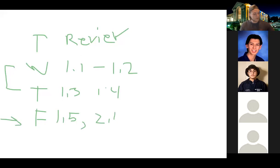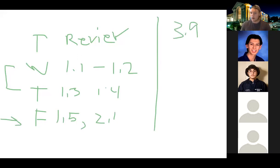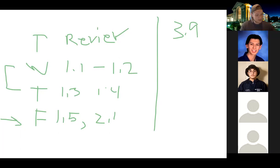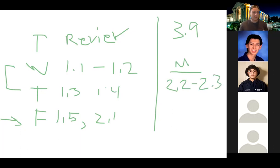We're going to try and get all the way up to section 3.9, but we're not going to do all the sections from each chapter — just the ones required for Math 1A. I'll have a detailed list for that. Today we're going over sections 1.5 and 2.1. On Monday we're going to go over 2.2 and 2.3. So this weekend, if you want to get ahead, read those sections.